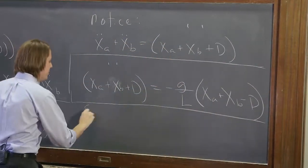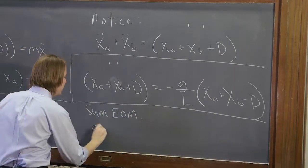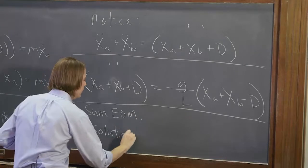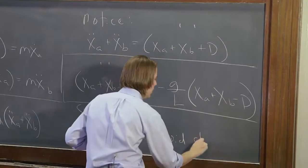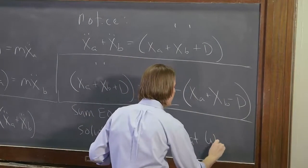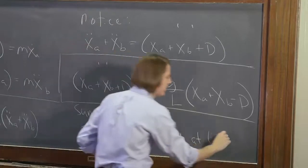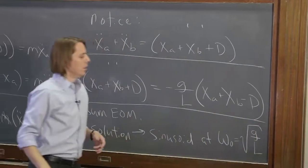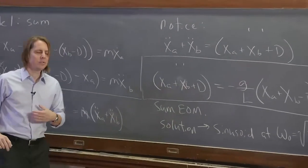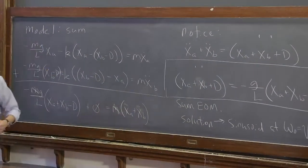So this is the sum EOM, and we know the solution from our previous work is a sinusoid at the natural frequency equals square root of g over L, just like it's a single pendulum. So one of these two normal modes seems to act like a regular pendulum. Let's see if that makes any sense.